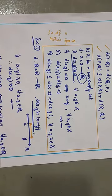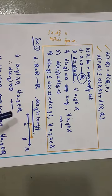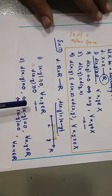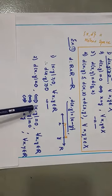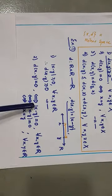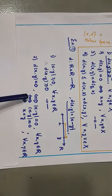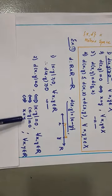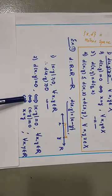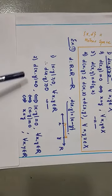Secondly, if D(x,y) = 0, then by definition |x − y| = 0. But this is an absolute value function, so |x − y| = 0 if and only if x − y = 0, which is if and only if x = y. This is the second property of the metric.